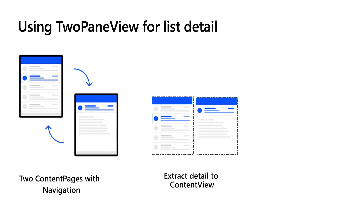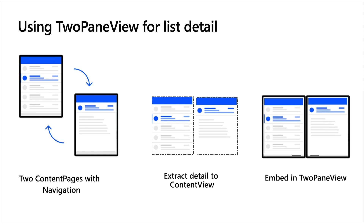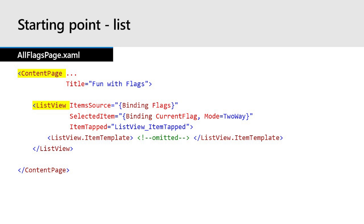Because we want to preserve the existing behaviour on a single screen device but show these together on the Surface Duo, we'll need to do some refactoring by extracting the details XAML into a reusable content view. This will enable us to embed the details in a page on the navigation stack as well as host it in a two pane view on the Surface Duo. This is the original XAML for the list page, which is also the root page for the app. It contains a list view with data binding and a tapped event that will open the detail page. We want to be able to show the list and the details side by side, but the flag image and description are currently in another content page.